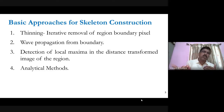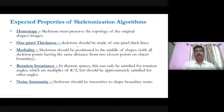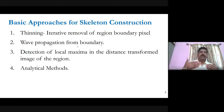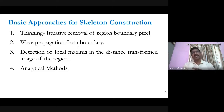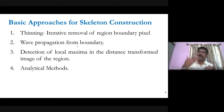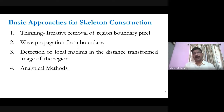Thinning is one way to obtain the skeleton. Another way is wave propagation from the boundary, which we will see through the medial axis transform. The third approach is detection of local maxima in the distance transform image of the region. Analytical methods also exist. In the literature there are several methods proposed, and we will study one medial axis transform-based method for obtaining the skeleton.